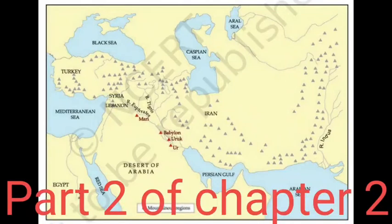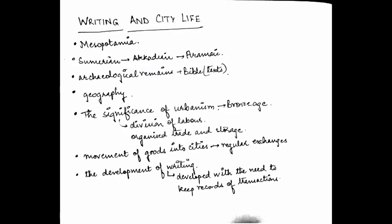This is part two of chapter two. In the previous part we were talking about the geography of Mesopotamia. As you can see on the screen, the map shows Central Asia plus the Arabian Peninsula. There are two rivers, the Euphrates and Tigris. To the east were plain areas, with mountains further east; to the south was desert with maximum agricultural production; to the north was the steppe; and to the west was the Mediterranean Sea.